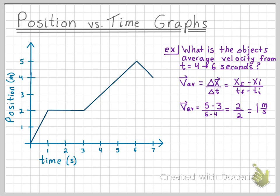There is one thing that you may have noticed. The slope of the straight line from time of 4 seconds to 6 seconds is also 1. This is because the slope of a position versus time graph is always equal to the average velocity.